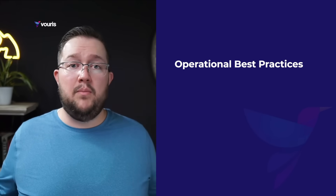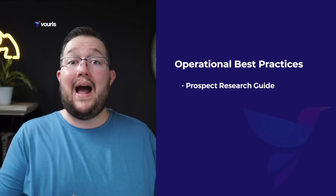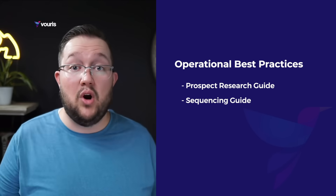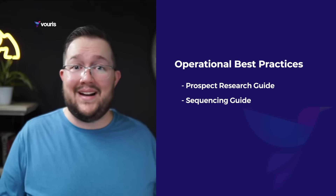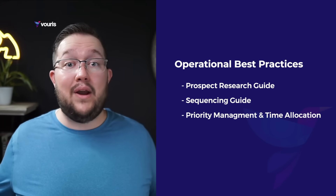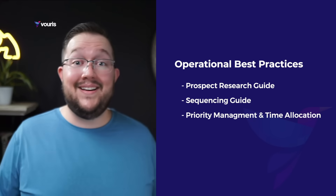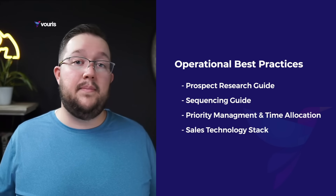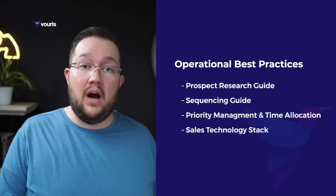Right after the messaging, we go into more operational best practices — how should you be researching an account, how should you be researching a contact, what are some best practices for a sequence if you're building your own, or do you have predefined sequences they're going to be using? How should the rep be managing their time and how do they prioritize what they're doing? And finally in this section, you must outline your technology stack. This is the part of the sales playbook that's going to need to be updated most frequently, and you need a place where a rep can see everything they have access to and where it fits within their workflow.